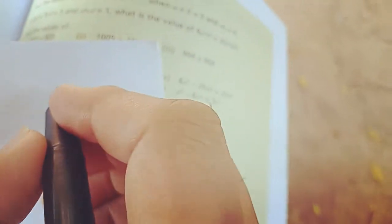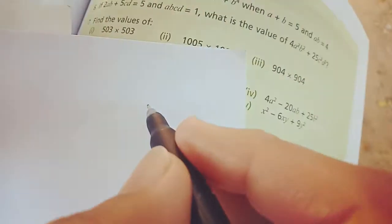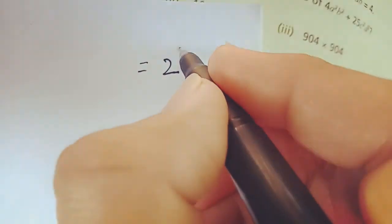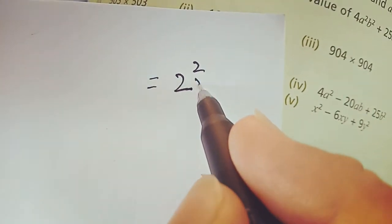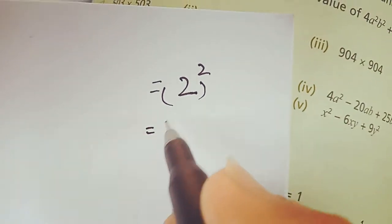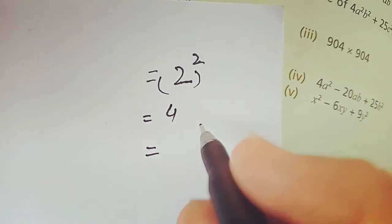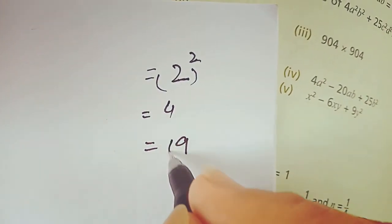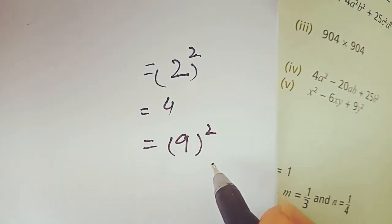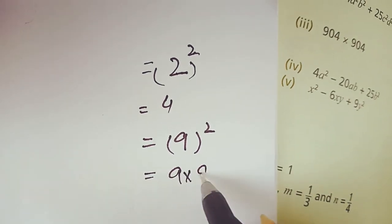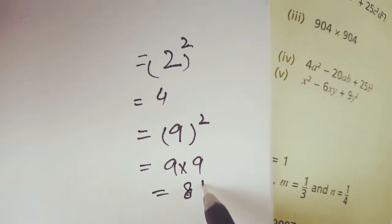If I ask you to find the square of 2, what will you do? You will apply a square on it and solve it: 2 twos are 4. If I ask you to find the square of 9, you will take a bracket, apply a square, and find 9 multiplied by 9, that is 81.